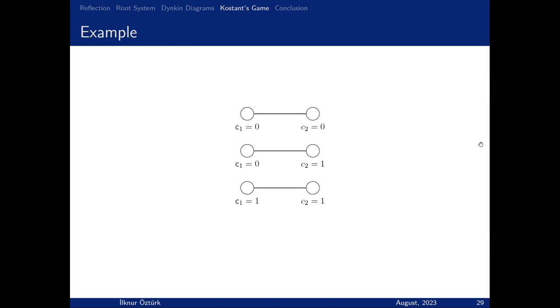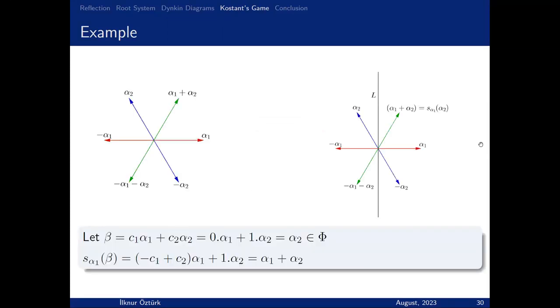Let's look at this example. This is A2, and we played this game. We started with c2 = 1. After that, we changed c1 to 1, and there are no unhappy vertices—the game is terminated. Let's focus. We started with c2 and ended with c1 = 1, c2 = 1. Now, this is the root system A2. Let β = α2, which means c2 = 1. Let's reflect β with respect to L. L has normal vector α1. Now we obtained c1 = 1 and c2 = 1. They have coefficients, and the coefficient of c1 has changed like we did in the game.